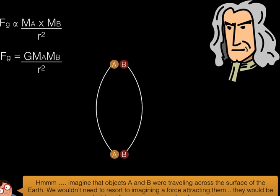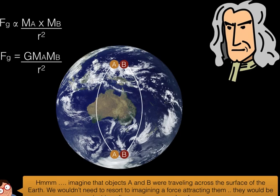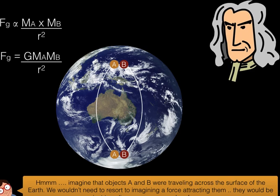How about if we consider the fact that these two objects weren't traveling through flat space, but they were traveling, say, around the surface of the Earth, which is a curved surface. What we would be observing is that they're not actually being attracted to each other - they're just traveling over a curved surface.